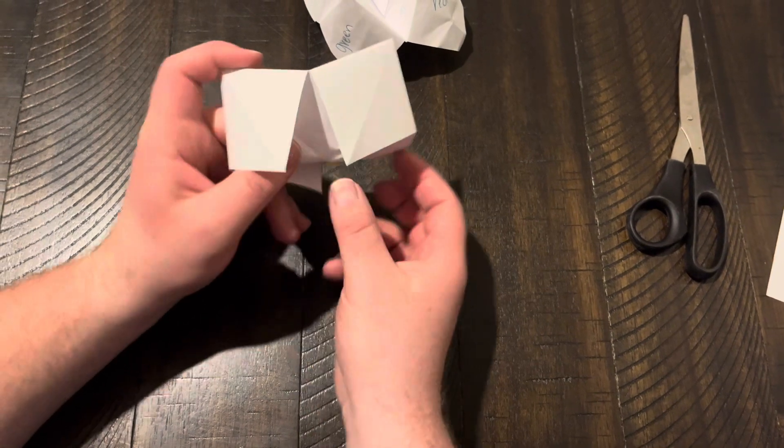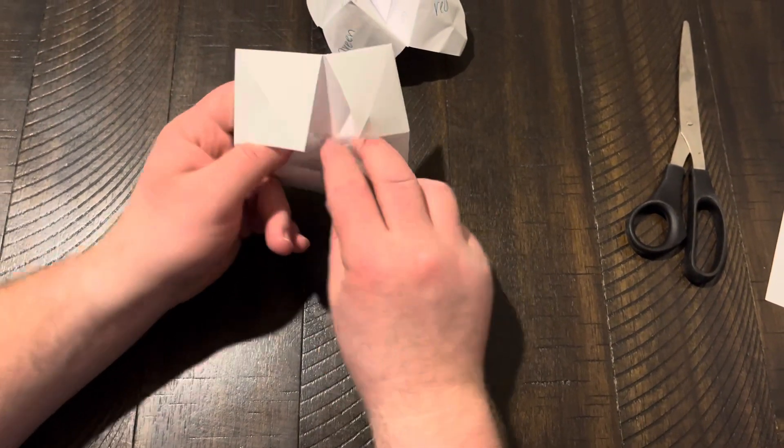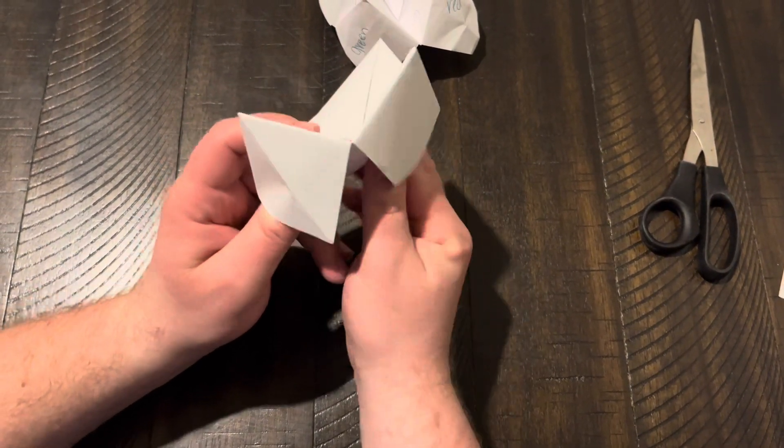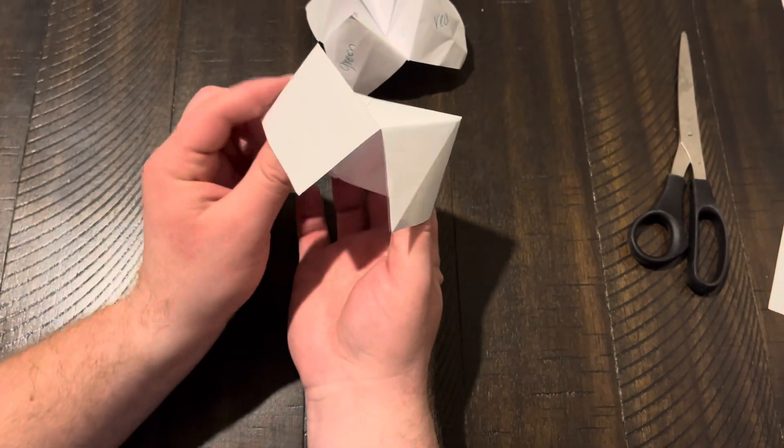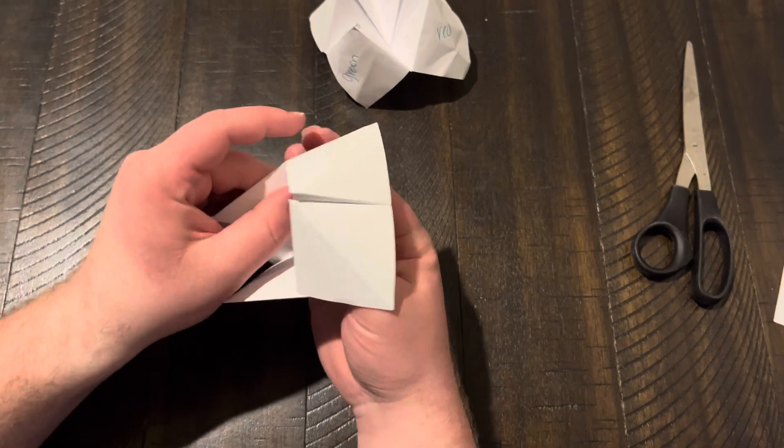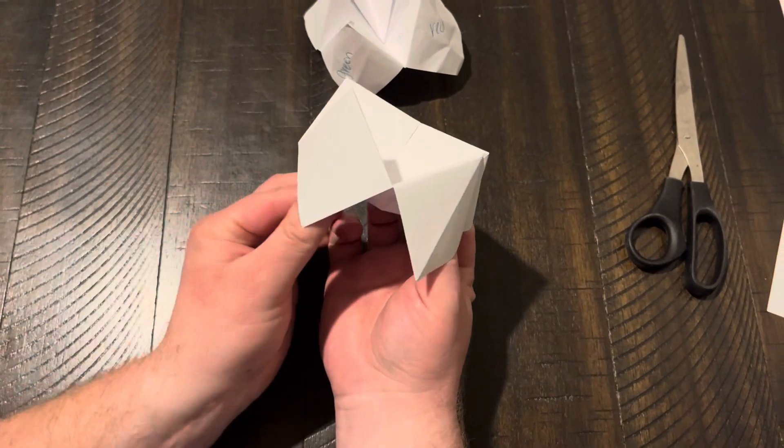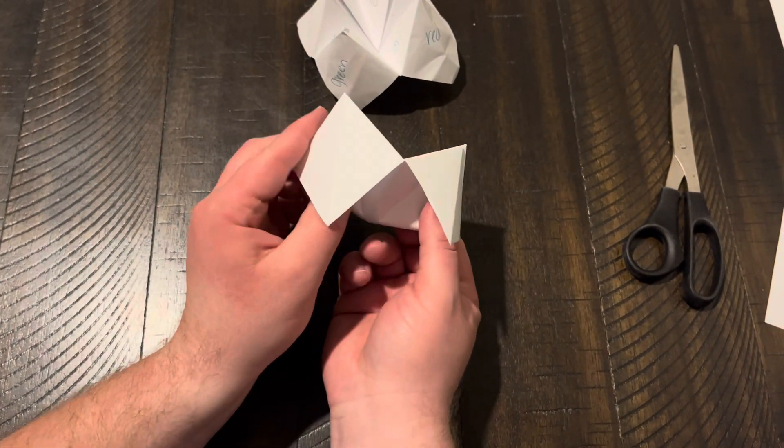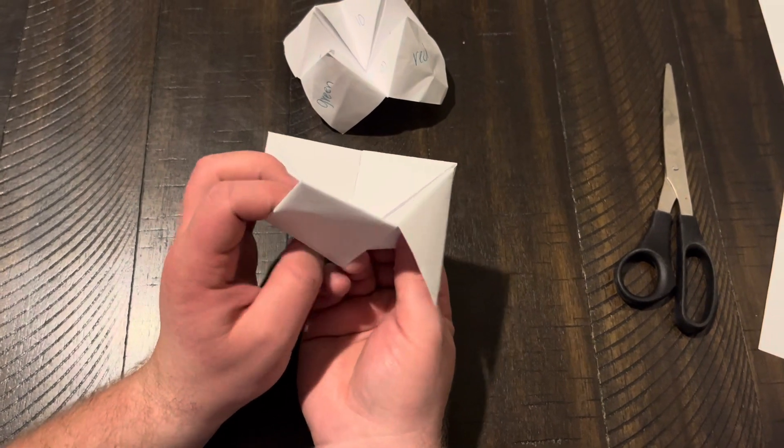Once you've done that, you should be able to put your thumb and index finger up into the flaps. You might need to work it until it gets a little bent the right way.